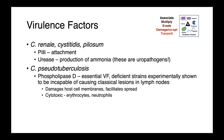Corynebacterium pseudotuberculosis produces phospholipase D, which is an essential virulence factor. Experimentally, strains deficient in phospholipase D have been shown to be incapable of causing the classical Corynebacterium pseudotuberculosis lesions. Phospholipase D damages host cell membranes and facilitates spread. It's also cytotoxic to erythrocytes and neutrophils.